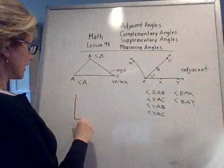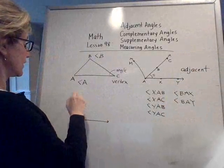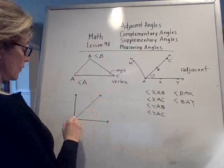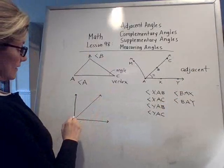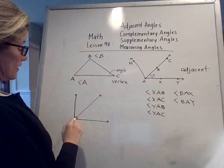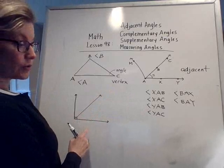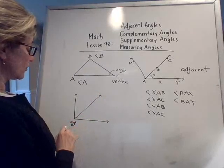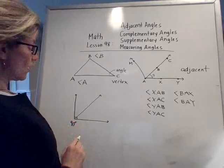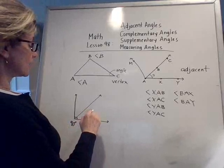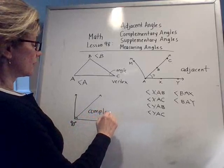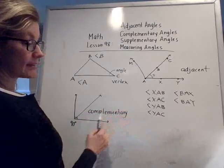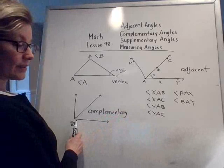Now over here, if I had two angles, these angles are also adjacent. But one thing that's different is this is a right angle here. And when there are two angles and the sum of them is 90 degrees, we would call those complementary. These are complementary angles, meaning that the sum of the two angles is 90 degrees.